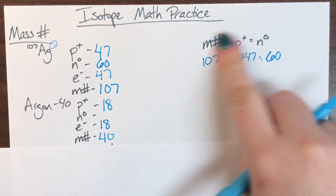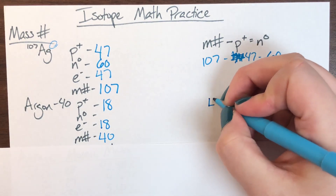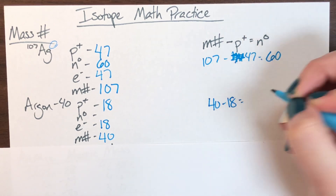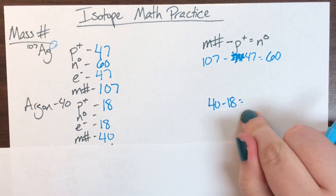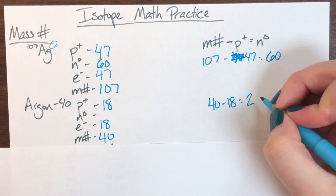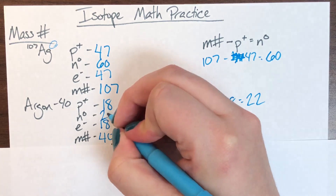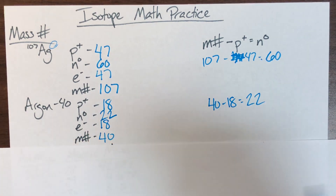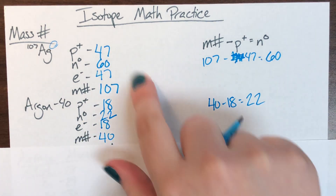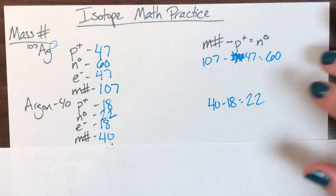Using the formula, mass number minus protons: 40 minus 18 gives me the number of neutrons, which is 22. That's the quick overview of how to read isotope notation and identify protons, neutrons, and electrons.